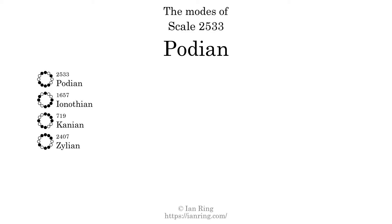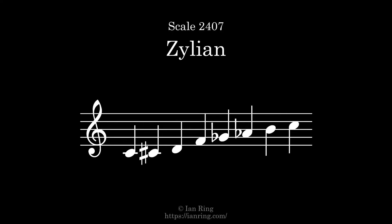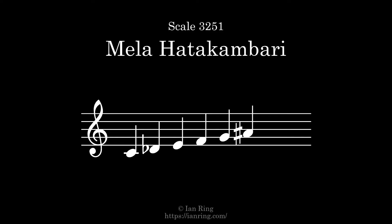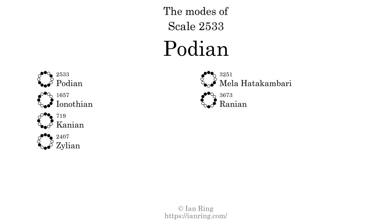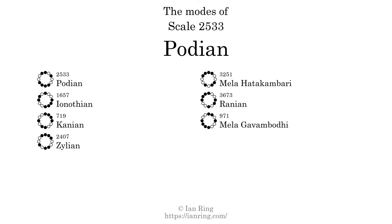The fourth mode is scale 2407, also known as Zalean. It sounds like this. The fifth mode is scale 3673, also known as Zalean. It sounds like this. The sixth mode is scale 3673, also known as Zalean. It sounds like this. The seventh mode is scale 971, also known as Milagavampodhi. It sounds like this.